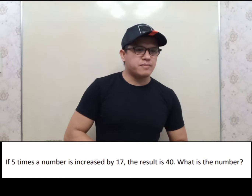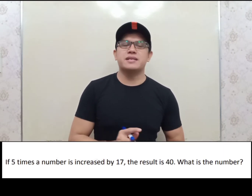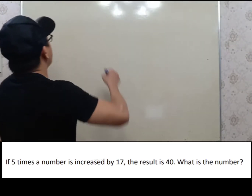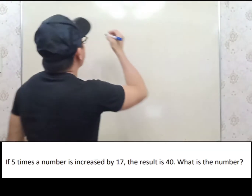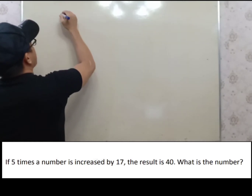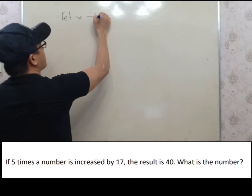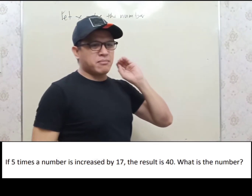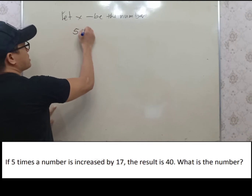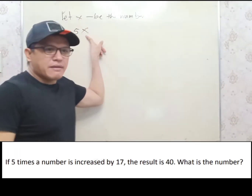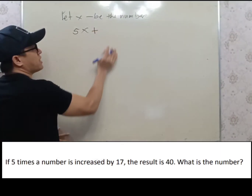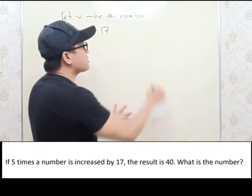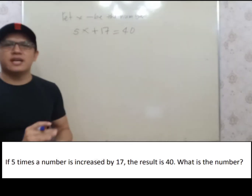If 5 times a number is increased by 17, the result is 40 — what is the number? Let x be the number. 5 times the number means 5x. When you say 'increased,' that's plus. So increased by 17 gives us 5x + 17, and the result is 40. So the equation is 5x + 17 = 40. This is how you interpret word problems.